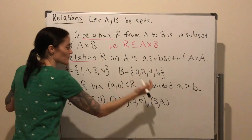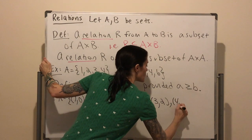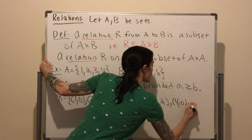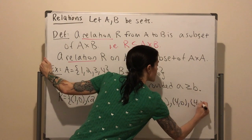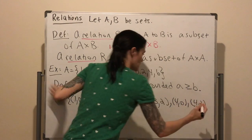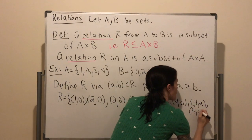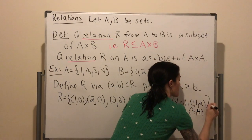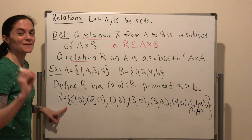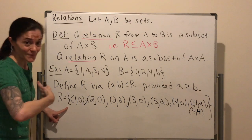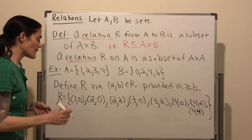And finally with 4, we have the ordered pairs (4, 0), (4, 2), and (4, 4). So this is my relation, listing the pairs.